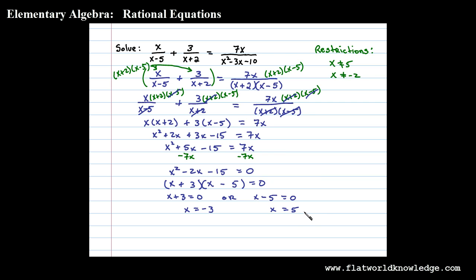Now as the last step you want to check to make sure these solve the original equation. Notice 5 is a restriction. If we were to substitute 5 into the original equation we would have 0 in the denominator which is undefined. Therefore we'll disregard 5 and consider it as an extraneous solution. In this case negative 3 is our only solution.